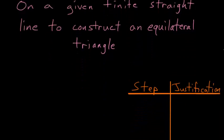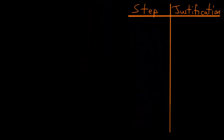So what this means is that we start with a straight line, and we'll label these points A and B, and what we're going to do is create an equilateral triangle from this starting point.